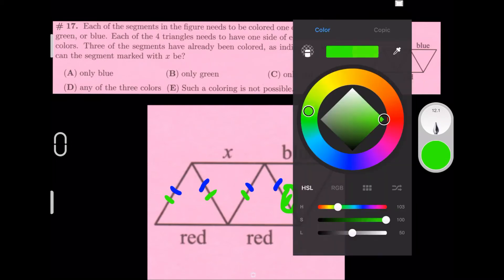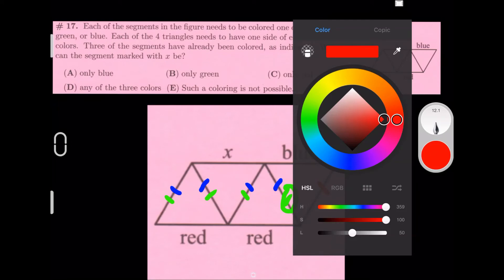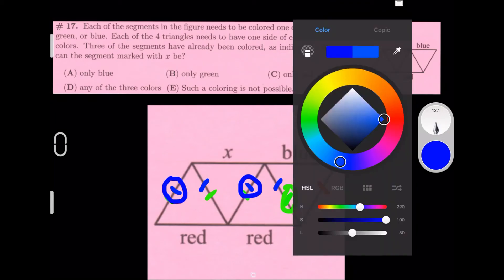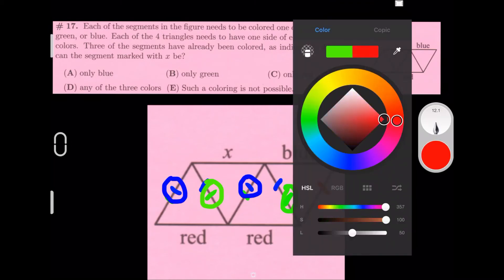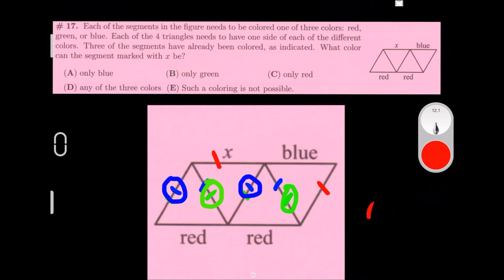So we would have a red right here. And then that would make the green right here. So we would have to have a blue right here, then a blue right here, and a green right here. And that would make it so that X is red. So our answer is C.